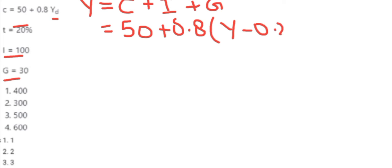So we will write 0.2Y. Plus the autonomous investment is 100, and government expenditure is 30. So we write 50 plus 0.8 times Y minus 0.2Y, plus 100 plus 30. This relation gives us the disposable income.